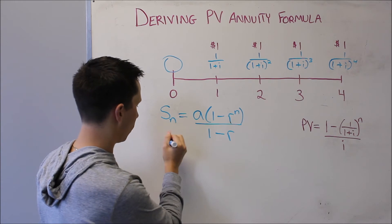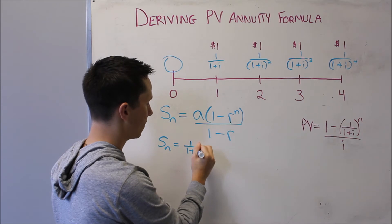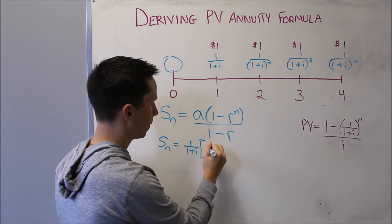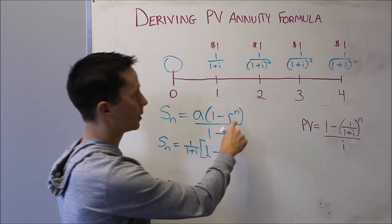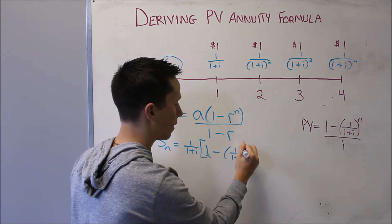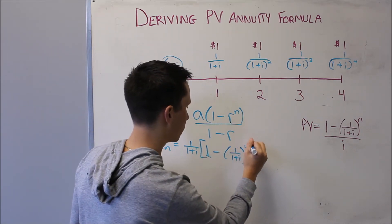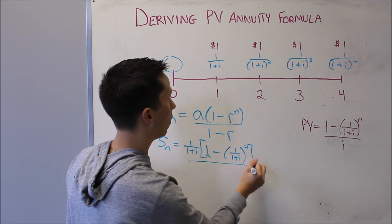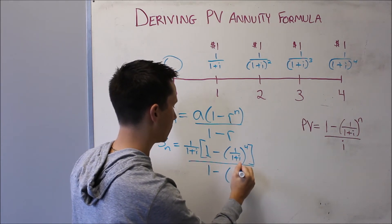So we're looking for the sum of these four terms. My first term is 1 over 1 plus i, multiplied by 1 minus r is also 1 over 1 plus i, because that's what we said we would multiply by to get to each next term. There's four terms, all over 1 minus r.